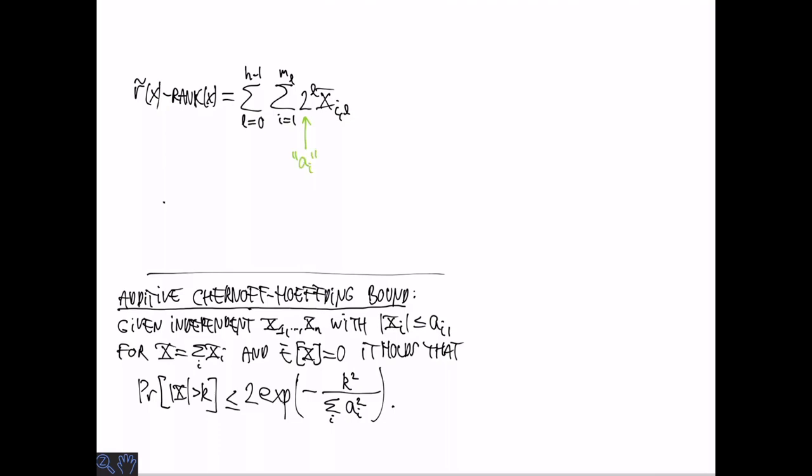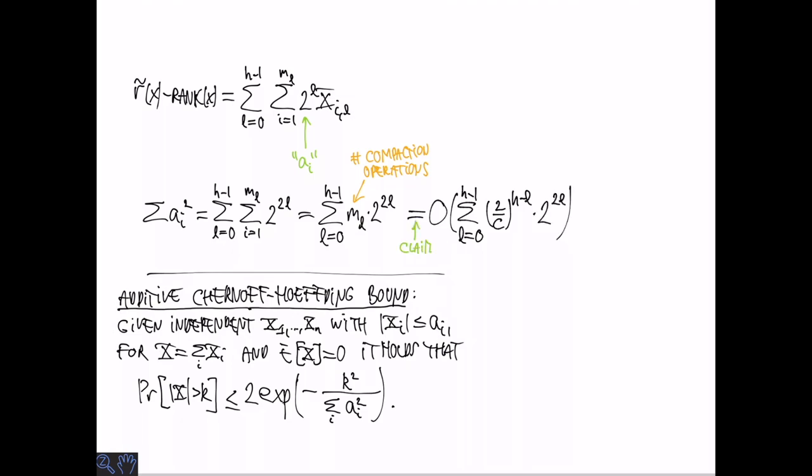Now let's go back to the sum we wanted to bound. So here the 2 to the L takes the role of AI in the lemma. So we need to bound the sum of all the AI squares. So that's this sum where we have 2 to the 2L in each of them. And we can rewrite this as ML multiplied by 2 to the 2L. So remember that's the number of compaction operations. And I claim that we can bound the number of compaction operations by 2 over C to the H minus L. So this is a claim we are going to get back to later. And now we have a sum that is clearly dominated by the last term. So that's because for each time L grows, this grows by a factor of more than 1. So it's a geometrically increasing sum and it's dominated by the last term. So this is O of 2 to the 2H.